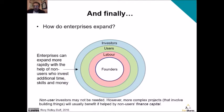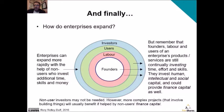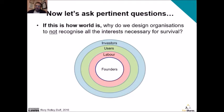Non-users may not be needed. However, more complex projects — particularly if you're going to build things or do construction — will benefit if you can find non-users who can provide financial capital. But even so, they're not the only investors. Founders, people who provide labour, and users of products and services are continually investing their time, effort and skills — investing human, intellectual and social capital, and possibly finance capital as well. So we need to ask: if this is how the world is, why do we design organisations that don't recognise all of these interests necessary for survival?